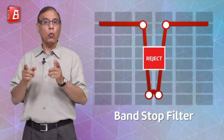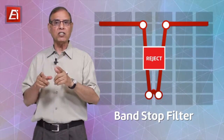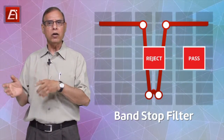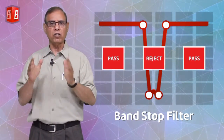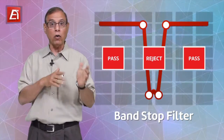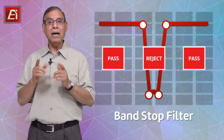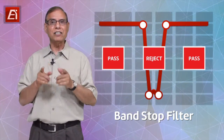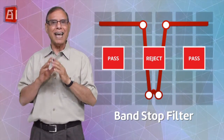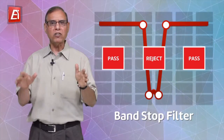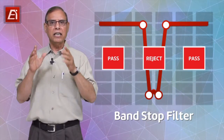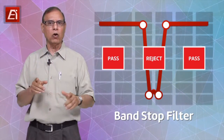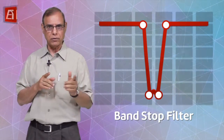So rather than rejecting signals higher or lower than your operating frequency, or both, a band stop filter rejects signals at any frequency at which a signal may be causing trouble.